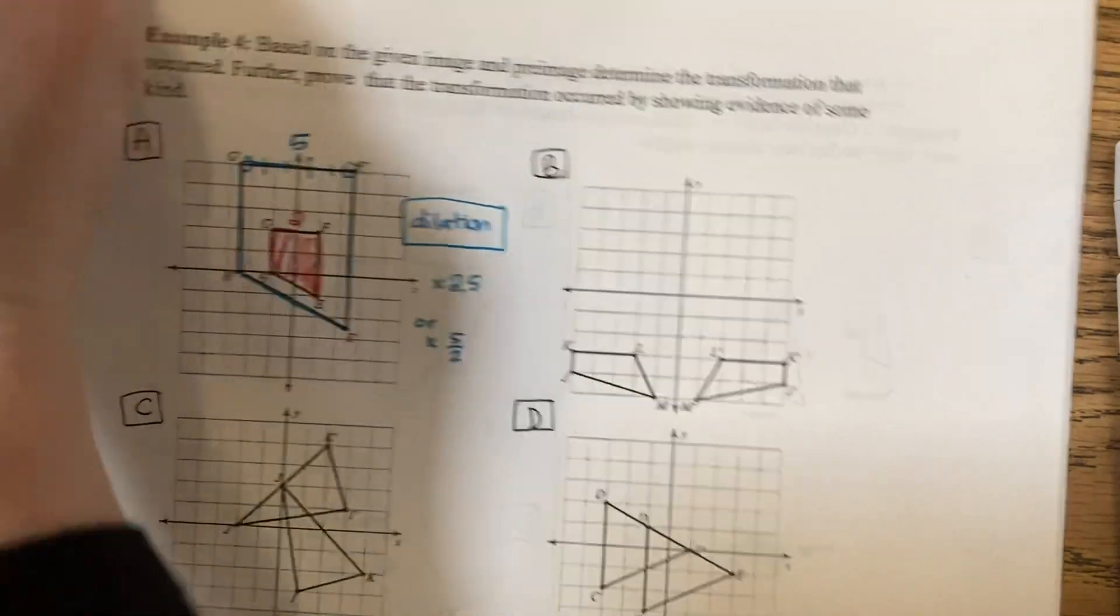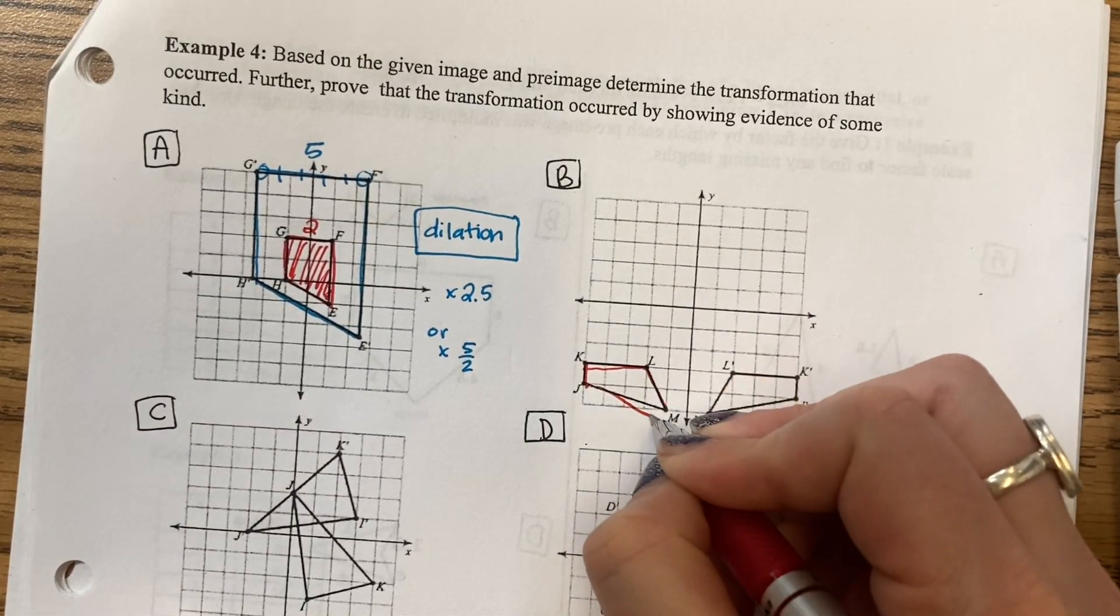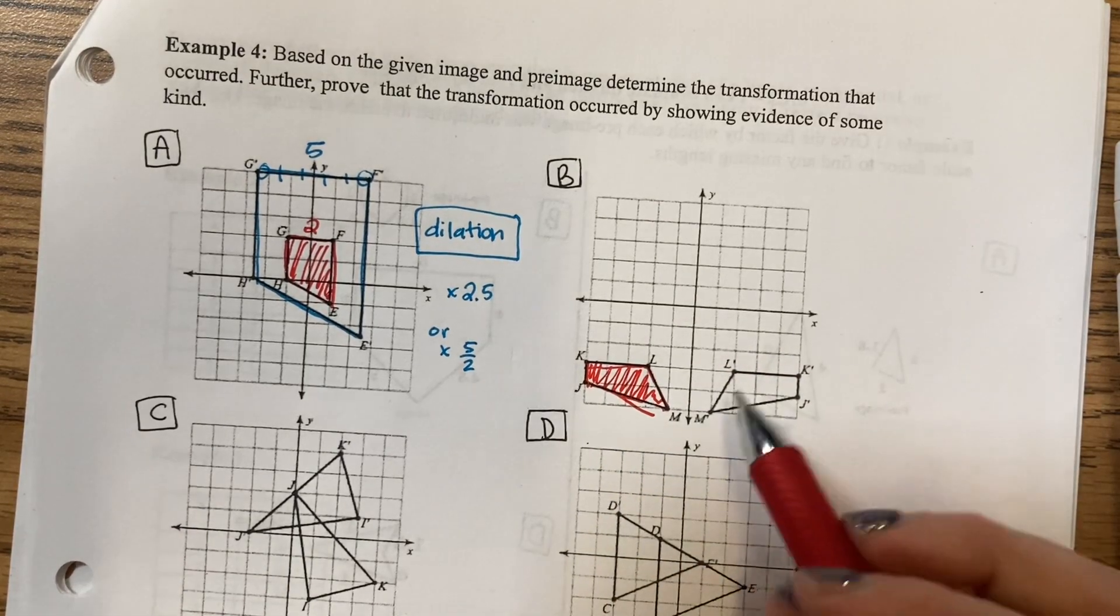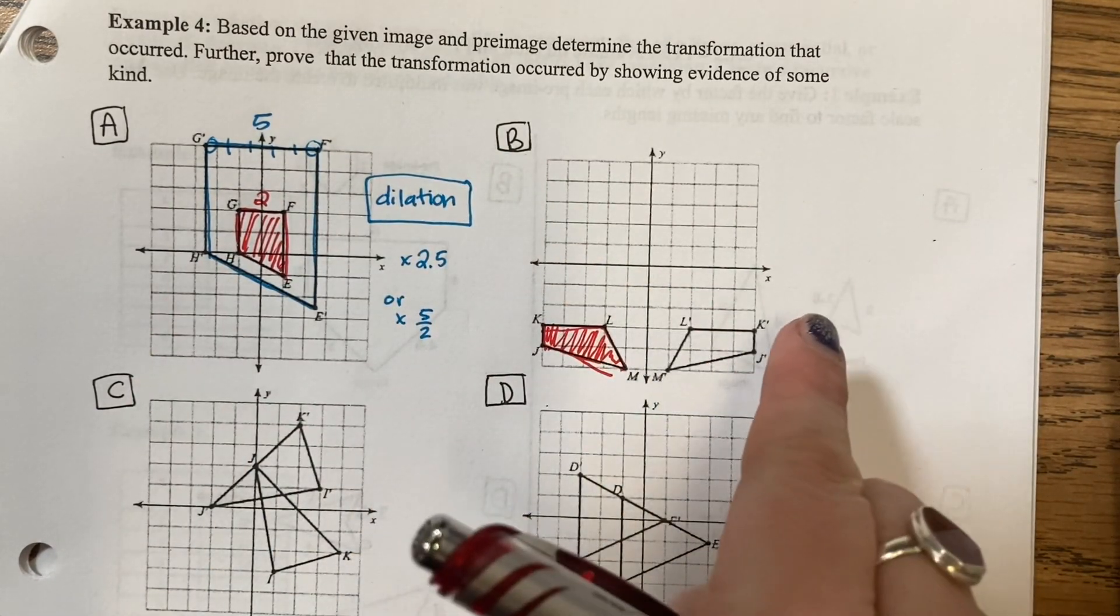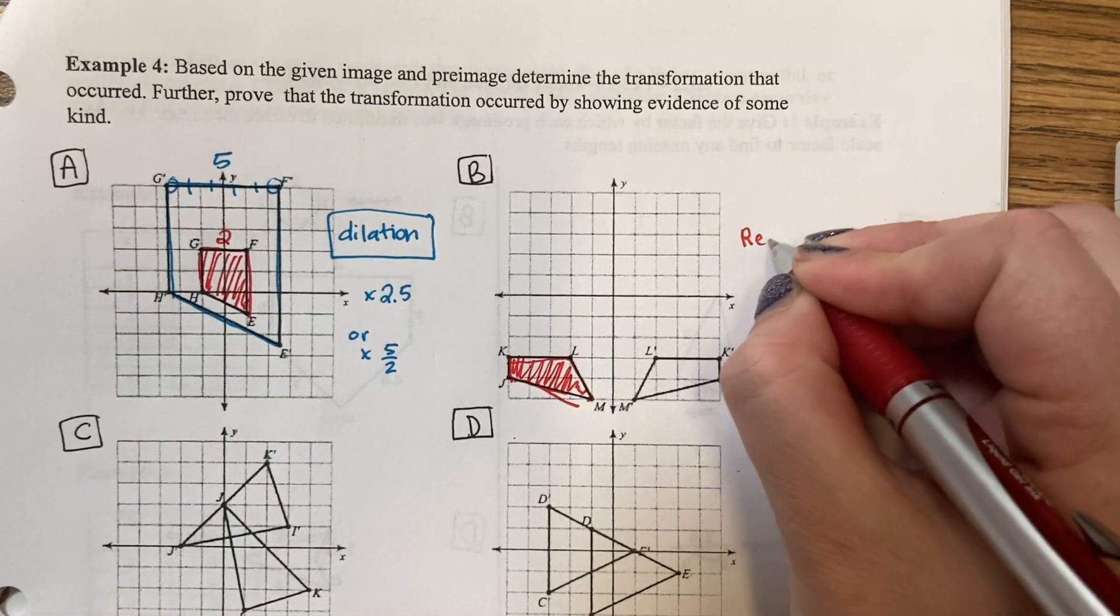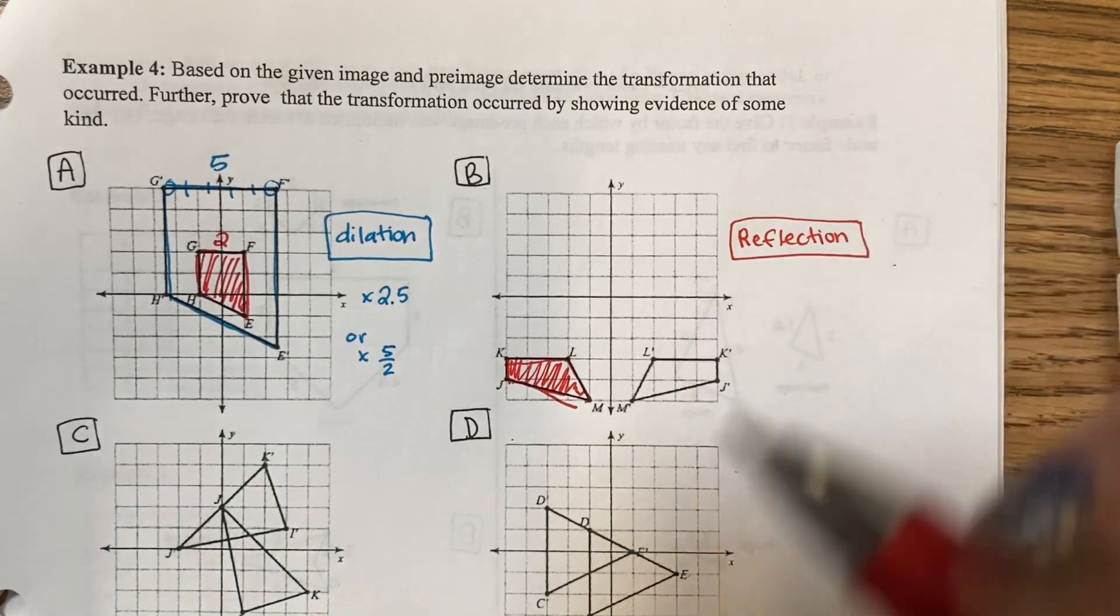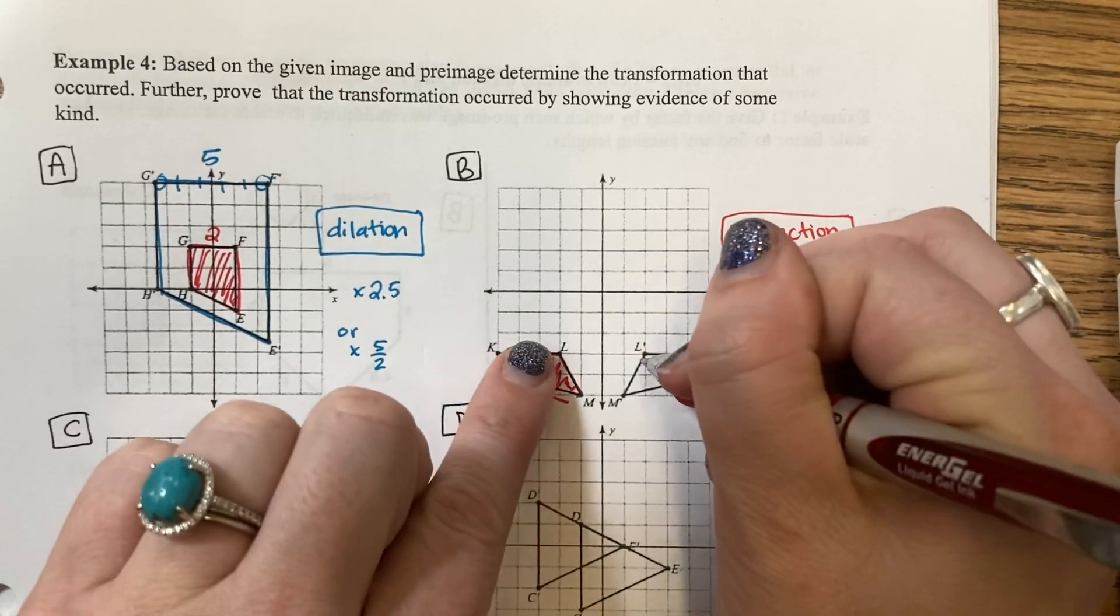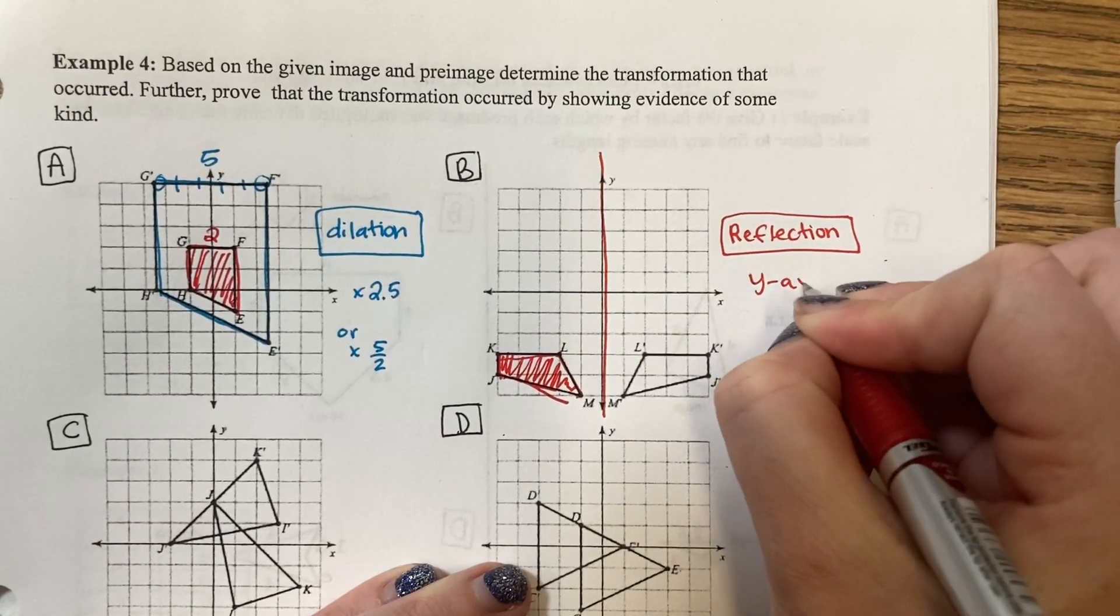Question B. Here is my pre-image. And it was moved over here. Now the movement, the K was flipped. The image has been flipped. This is called a reflection. And if I want to know what line it was, I draw a line down the middle of the two points because they'll be equal distance. It was reflected over the y-axis.